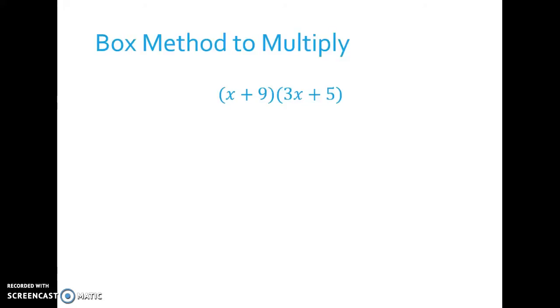The box method of multiplying polynomials is similar to using tiles, except we don't represent everything the way we do with tiles. Instead we say this is a binomial. It has two terms. So along the edge we're going to have two rows. And this is also a binomial, so we are also going to have two columns. The height is going to be x plus 9. Since it's positive, I don't have to write a negative sign in front of it or a positive sign. And then 3x and 5. And actually you can put the 3x plus 5 on the side or you can put it along the top. You just have to have x plus 9 as one dimension and 3x plus 5 as the other dimension.